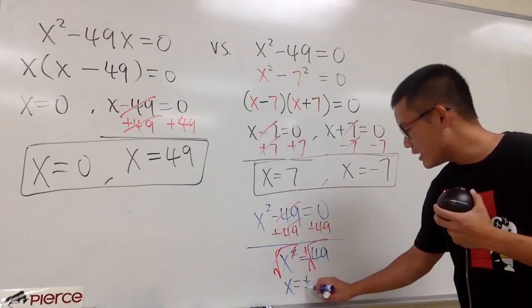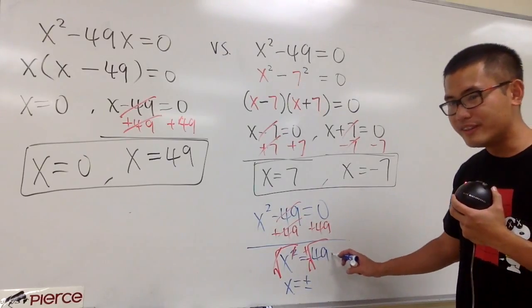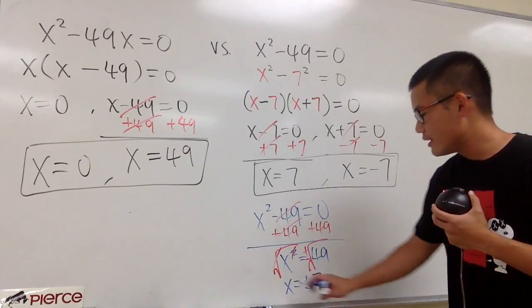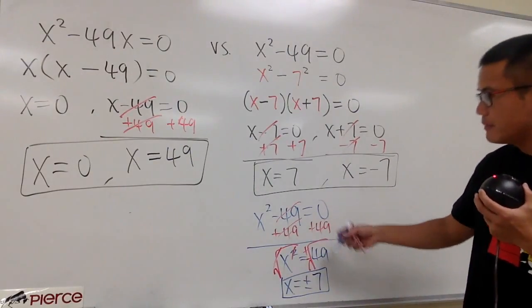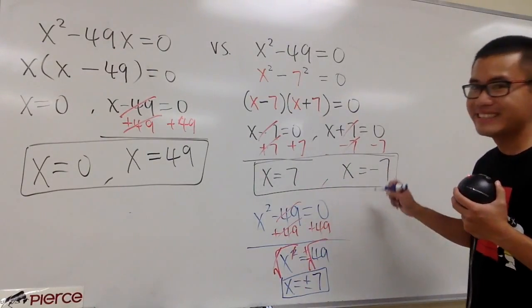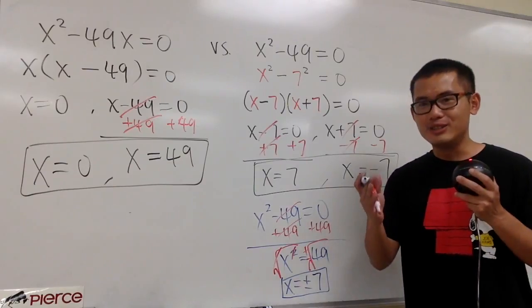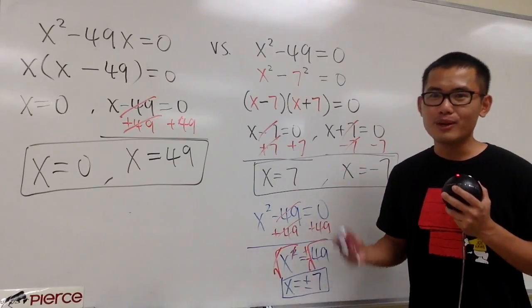Positive, negative. And then, square root of 49 is just 7. x is equal to plus or minus 7. Same as 7 or negative 7. That's it. Did you get this right? Comment down below. Let me know.